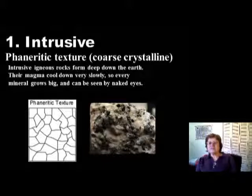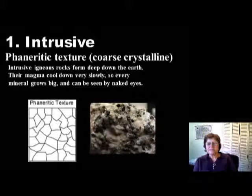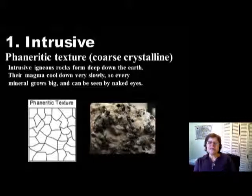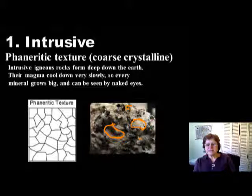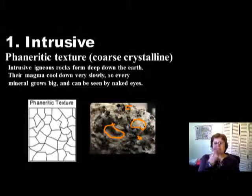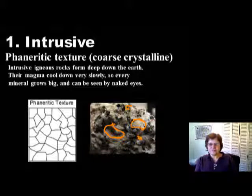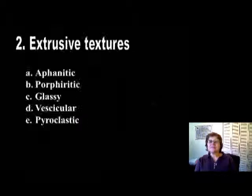The intrusive texture type is called phaneritic, or coarse crystalline. When you have phaneritic texture, you can look at the igneous rock and name every single mineral in it — you can see the K-feldspar, the biotite, the quartz, and so on. Every single mineral is visible with your naked eye, and we call it phaneritic.